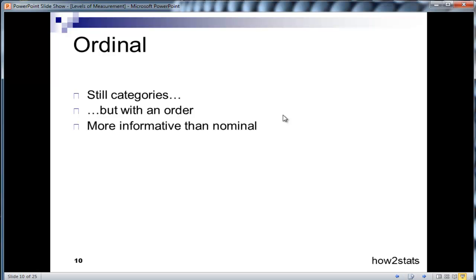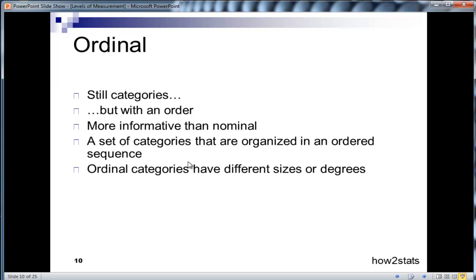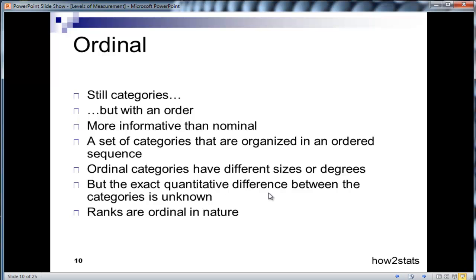So ordinal scales are more informative than nominal scales. In fact, nominal scales are the least informative scale that exists in Stanley Stevens' framework. A set of categories that are organized in an ordered sequence is basically the definition of an ordinal scale. Ordinal categories have different sizes or degrees, but the exact quantitative difference between the categories is unknown. And I'll show you some examples so this becomes more clear.